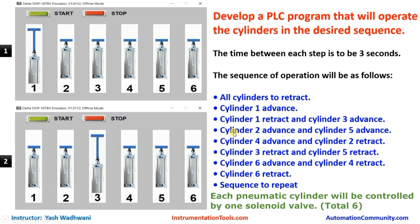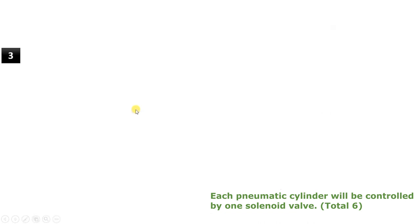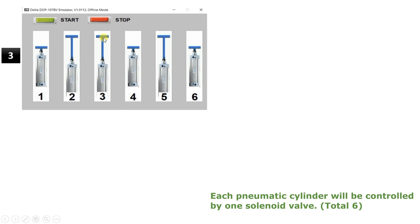Again after three seconds, cylinder two should advance and cylinder five should also advance. Cylinder three was already in the on position — as long as the supply to the solenoid valve is available it will remain in this position. In the third step we have advanced cylinder two and five, so at this moment a total of three cylinders will be in the advanced position.